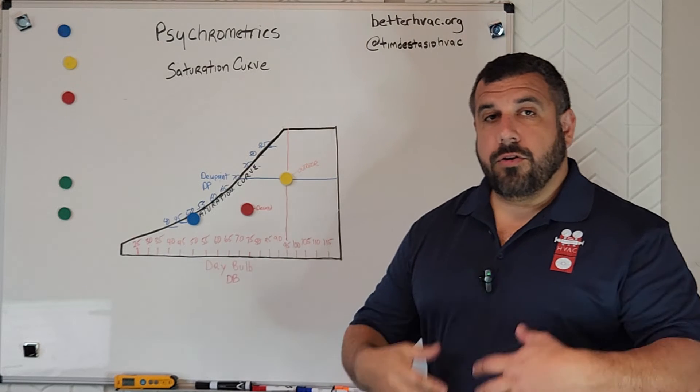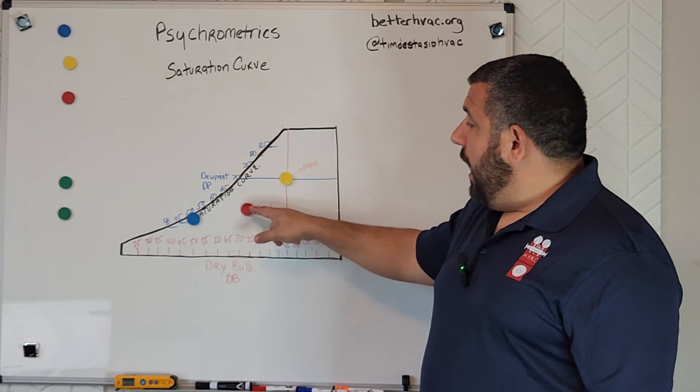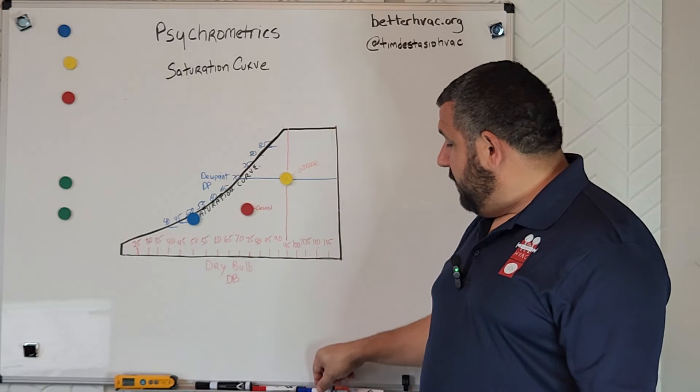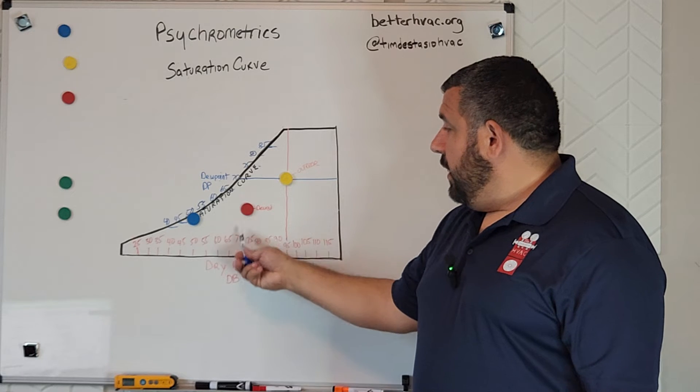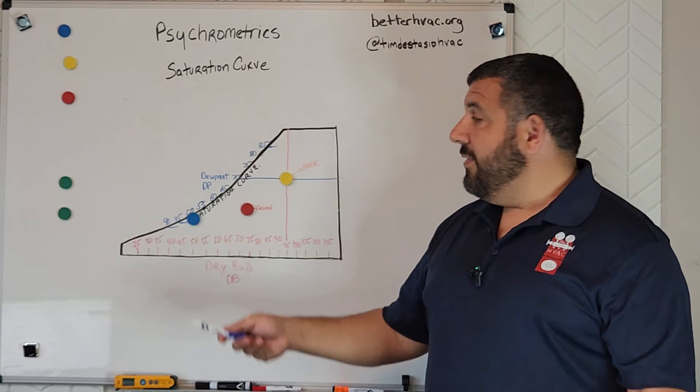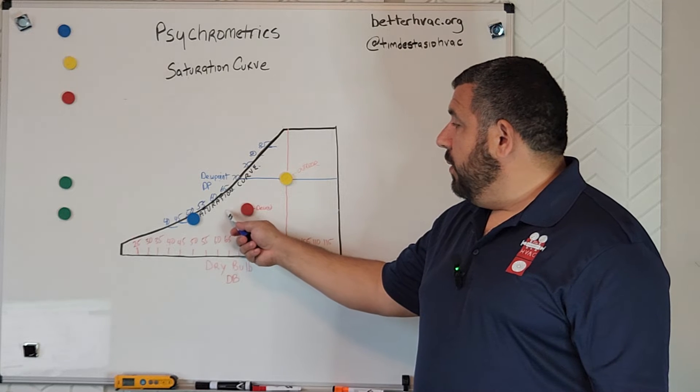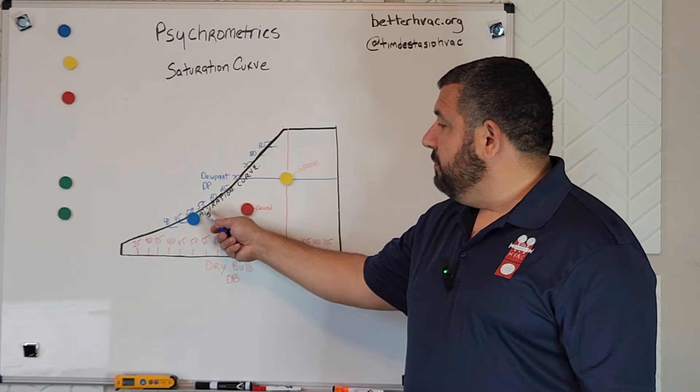And that's what happens when we turn our air conditioning on, our air starts cooling down. So the very first thing it's going to do is we're going to start removing dry bulb temperature. We're cooling that air down, but once we cool it down to this point...